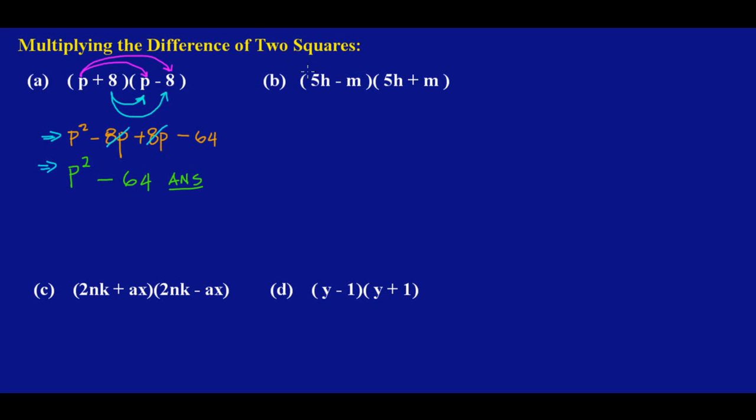Again, we're going to be doing the same thing. I'm going to use 5h to multiply 5h, and then 5h is going to multiply that 5h, and then 5h is going to multiply that m over there.